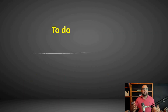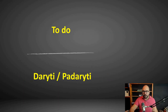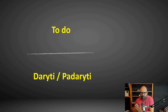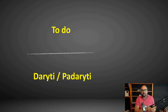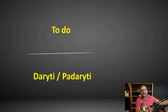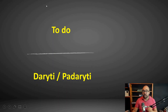For example, 'to do.' That means 'daryti' or 'padaryti.' The difference is that 'daryti,' translated directly, just means to do. 'Padaryti' implies that something is already done — it implies some sort of ending or result to that action. It's especially important when talking about the past tense, when something has been done. So 'to do' is 'daryti' or 'padaryti.'